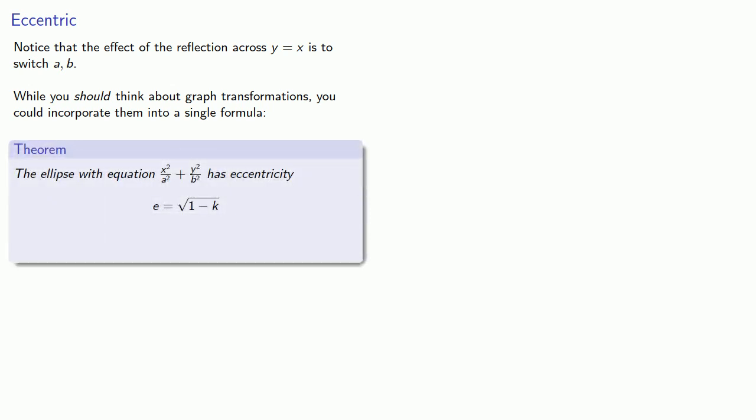Namely, that the ellipse with equation x² over a² plus y² over b² has eccentricity e equals square root of 1 minus k, where k is either a² divided by b² or b² divided by a², whichever is necessary to make the eccentricity a real number.